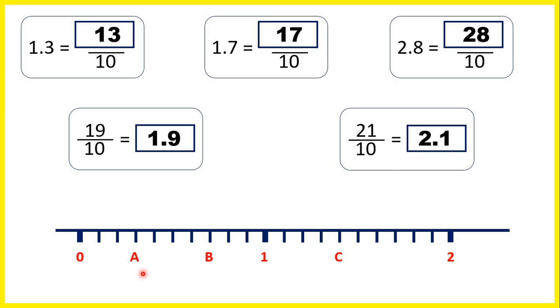Finally, let's write the values of A, B and C on this number line. We have 0, 1 and 2 labelled, and between the whole numbers, we have 10 little lines. So each of these lines must represent 1 tenths.